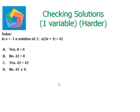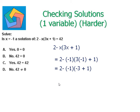Writing the left-hand side of the equation, we get 2 minus x times open bracket 3x plus 1 close bracket. Plugging in the value of x equals negative 1, we get 2 minus (negative 1) times open bracket 3 times negative 1 plus 1 close bracket. Solving the parenthesis first, we get 2 minus (negative 1) times (negative 3 plus 1), giving us 2 minus negative 1 times negative 2, which equals 2 minus 2 equals 0.